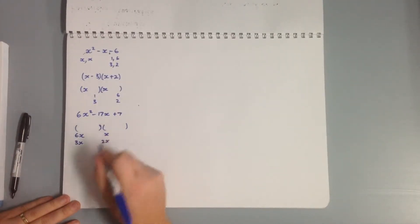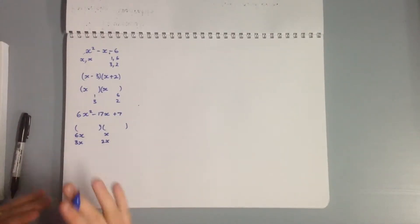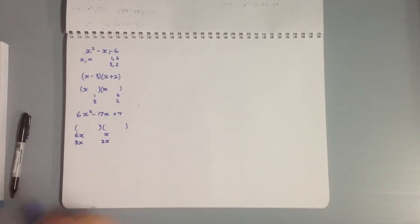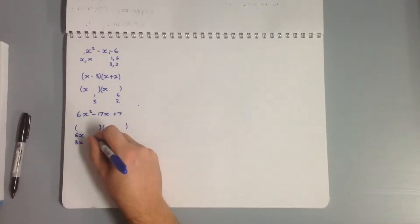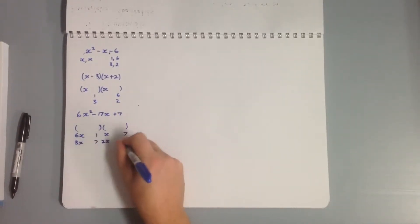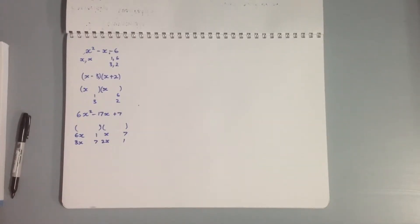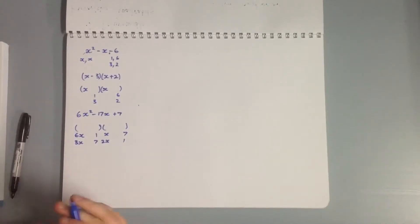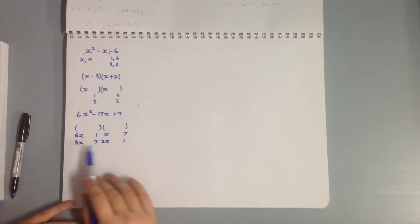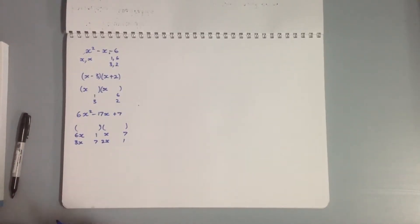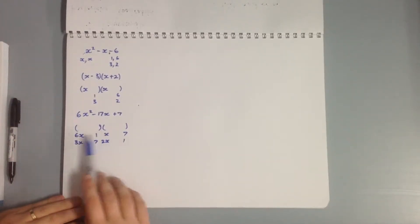We can also potentially have those reversed. Our factors of 7 are one and seven, or seven and one. We need to get to -17x in the middle. Most of the time with these questions, the 6x and x combination doesn't come up that often, so I'd usually go for 3x and 2x first — but be aware that the other combination is possible.